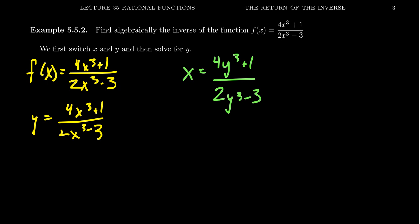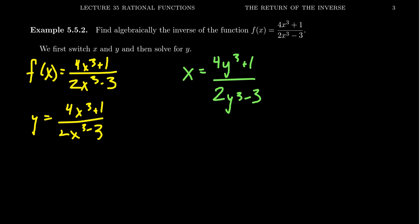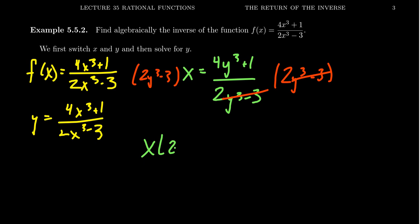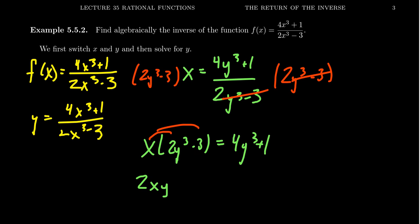Unlike the previous example, this one has multiple y's inside the formula. So before we can isolate y, we have to reunite the y's — the y cubed in the denominator is separated by the fraction bar, so we need to get it out of the denominator. To do that, we multiply both sides by 2y cubed minus 3 to clear the denominator. What's good for the goose is good for the gander — we do it to both sides. This gives us x times (2y cubed minus 3) equals 4y cubed plus 1.